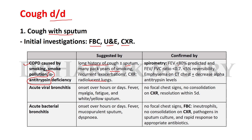COPD is confirmed by spirometry showing FEV1 less than 80%, FEV1/FVC ratio less than 0.7, and reversibility less than 15%. CT chest may show emphysema, plus or minus decreased alpha-1 antitrypsin levels. Acute viral bronchitis is suggested by onset over hours or days with fever, myalgia, fatigue, and white or yellow sputum. It is confirmed by no focal chest signs, no consolidation on chest X-ray, and resolution within five days.